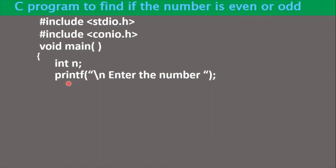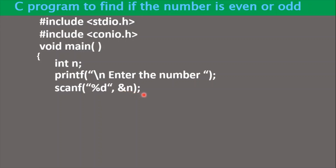Now write the prompt message: printf("Enter the number"). When this statement executes, the user will see the message and know that a number is to be entered. In C language, whenever data is to be taken from the user, we write a scanf function. We take one integer number, so inside scanf we write %d, and the variable name is n. Do not forget to put the ampersand sign before the variable name. When the user types the number, it gets stored in memory at variable n.